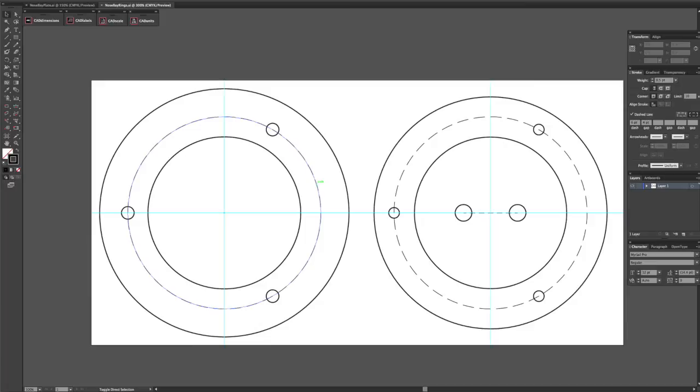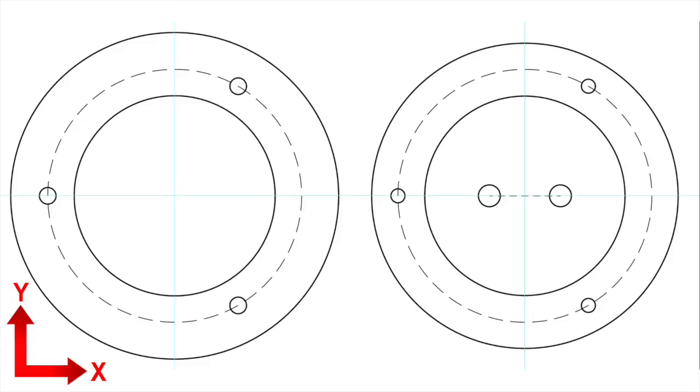We're drawing the parts in a top view, and it's important to keep track of the X and Y axis. Generally, in page drawing programs, X is across and Y is up. In Illustrator's case, the origin is in the lower left.